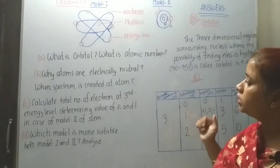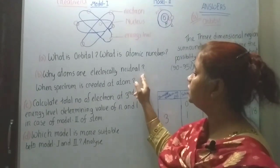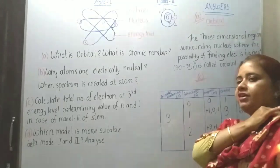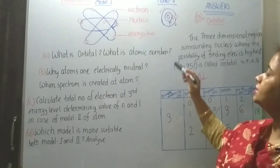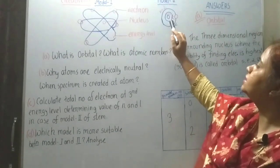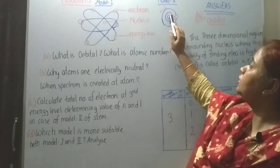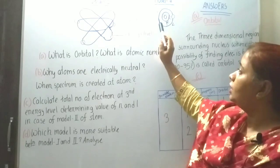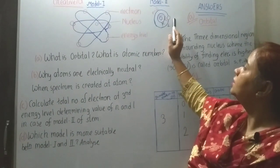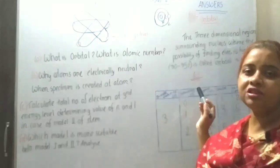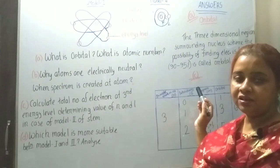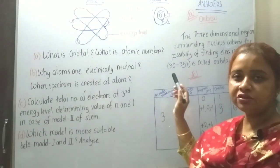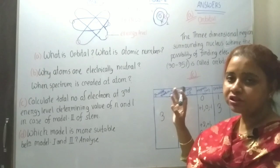Then, question number B: Why are atoms electrically neutral? Atoms are electrically neutral because inside the atom, at the center, there are positively charged particles named protons. And around the nucleus, there are electrons, which are negatively charged particles. The number of electrons and protons are equal.